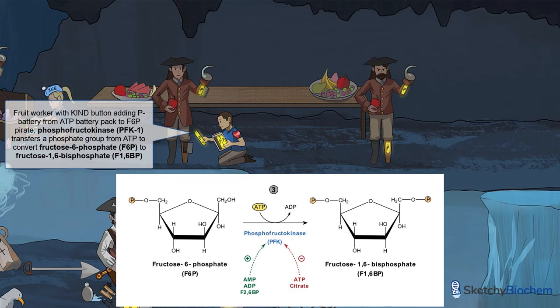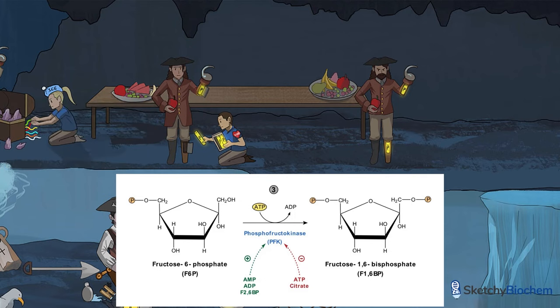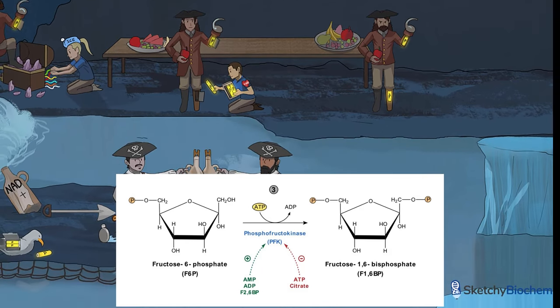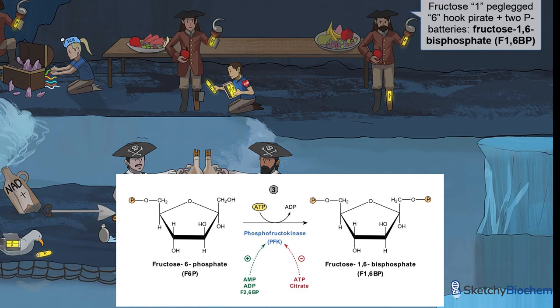The peg legs represent carbon number 1. He's surrounded by fruit to remind you of phosphofructokinase 1. This step is also irreversible, as shown by the waterfall. The six hook pirate now has two phosphate batteries — one in his six hook arm and one in his one peg leg — hence F1,6-BP. So far, we've used two ATP.